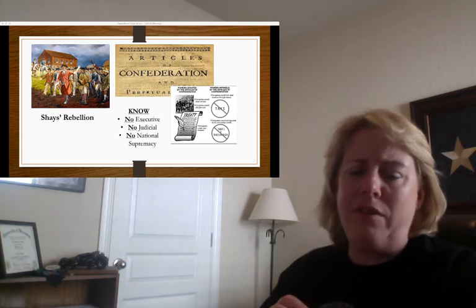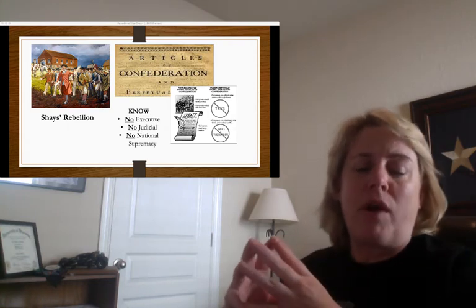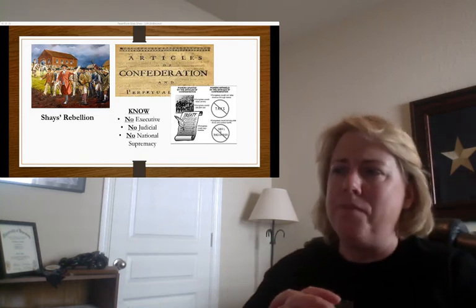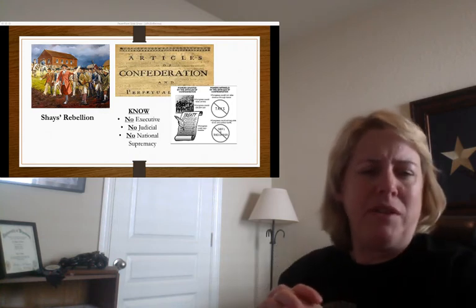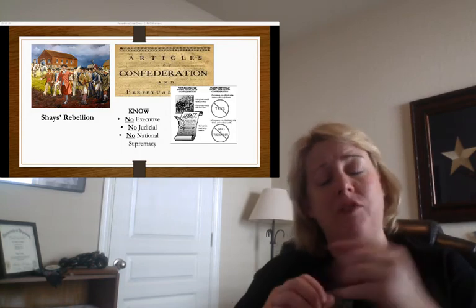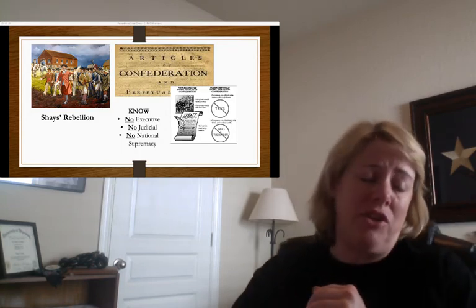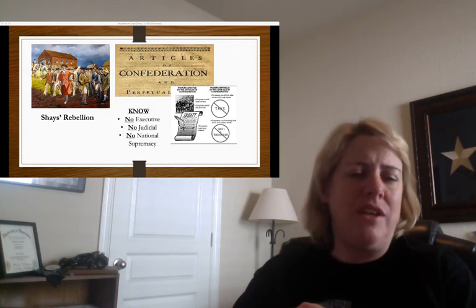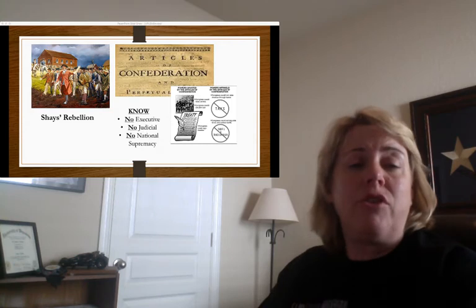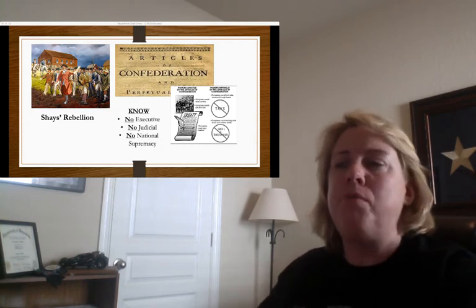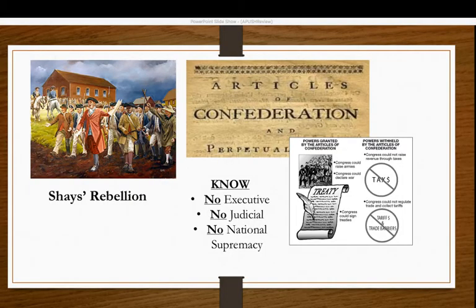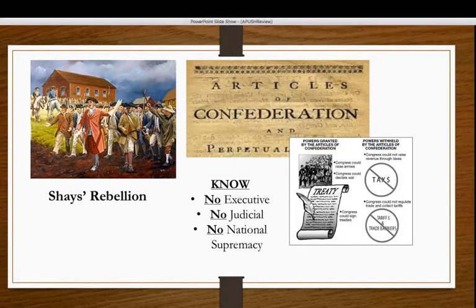This weakness was exemplified with Shays' Rebellion. Farmers in western Massachusetts were angry about property taxes and stormed the courthouse, shutting it down. Massachusetts had no way to call in an army because there was no national army, so they had to hire an army to put down Shays' Rebellion. This showed us we had a lot of problems with our current government.